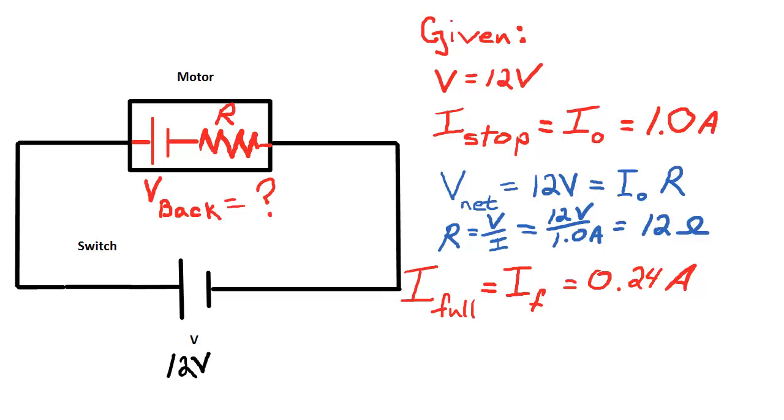We know the current. The current when it's running at full speed is 0.24 amps. All we have to do is figure out V-back. Keep in mind we also know now that the resistance is 12 ohms and that does not change. So again, if we use Ohm's Law, we can figure out what our net voltage must be to generate 0.24 amps of current.